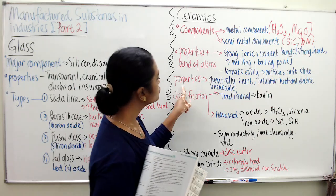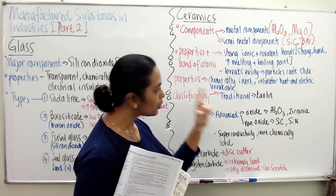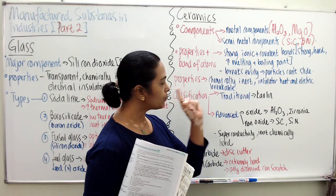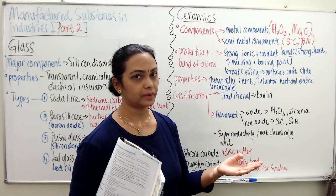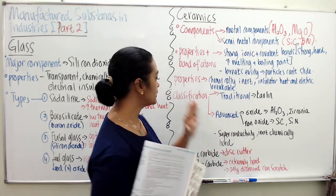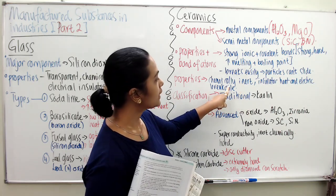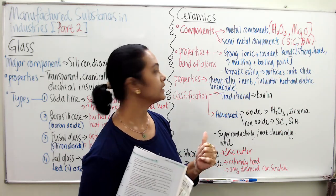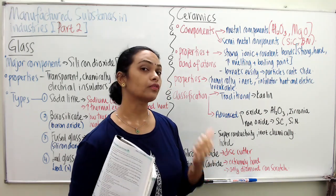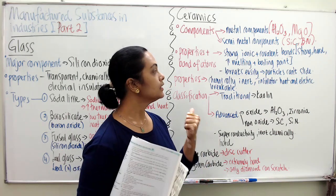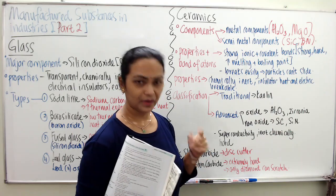So why is ceramic as popular as glass? Properties: ceramics are non-transparent, but they are chemically inert, good insulators of heat and electricity — however, they are breakable.